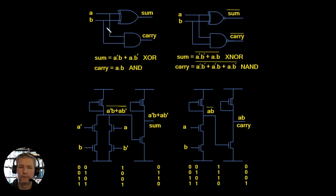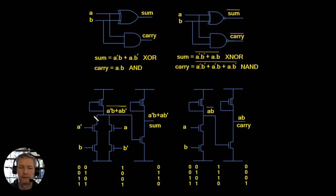We've got the circuit drawn above as a reminder — sum and carry. We'll implement the logic function: A-NOT in series with B, in parallel with A in series with B-Not — that's the exclusive OR structure. When we implement this in NMOS we actually get the complement — the exclusive NOR. We have a depletion transistor for the load and drive transistors given by A' and B in one branch, and A and B' in the other.